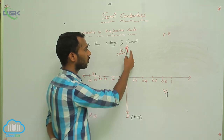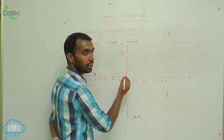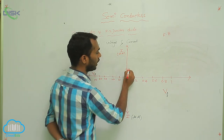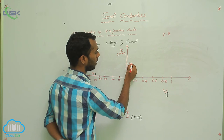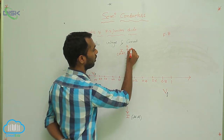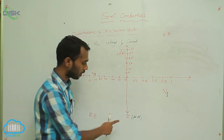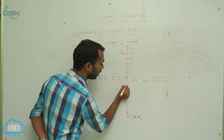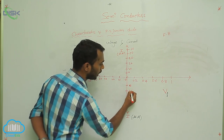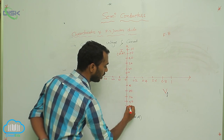In forward bias, current is more, in milliampere we are measuring — say 10 milliamps, 20 milliamps, 30 milliamps, 40 — like that I am taking current. In reverse bias, current is less, that is in microamps — say 10 microamp, 20 microamp — that small current I am taking in reverse bias.